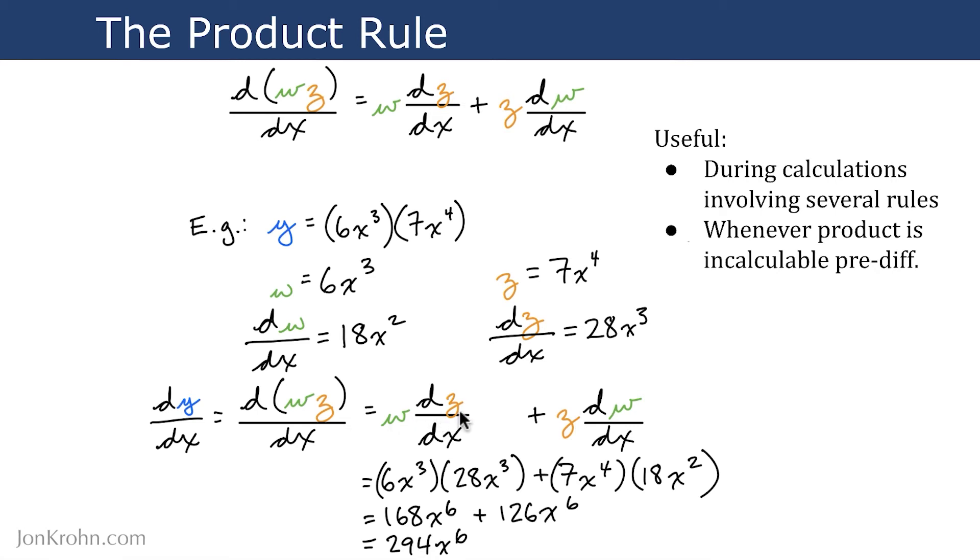So we simply plug in the values. w is 6x cubed. dz/dx is 28x cubed. And then the second term here, z is 7x to the 4. And dw/dx is 18x squared.